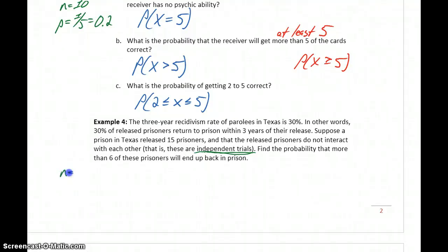Find the probability that more than six of these prisoners will end up back in prison. So in this case, we have 15 prisoners who were released, and we know that the recidivism rate is 30%, so our probability of success is 0.3. In this case, the success being considered that the person does return to prison. We want to calculate the probability that more than six, so X is greater than six.